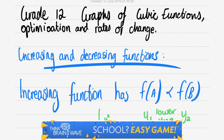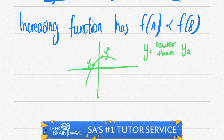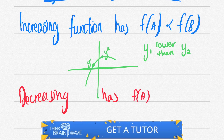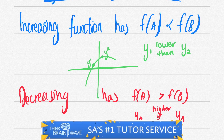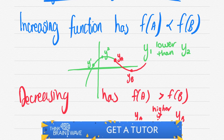In this video we'll be talking about grade 12 graphs of cubic functions. We'll be looking at the increasing function as well as the decreasing function. It looks like we have an increasing function between point y1 and point y2. A decreasing function has the function of a on the left which must be greater than the function of b on the right, where ya is higher than yb.